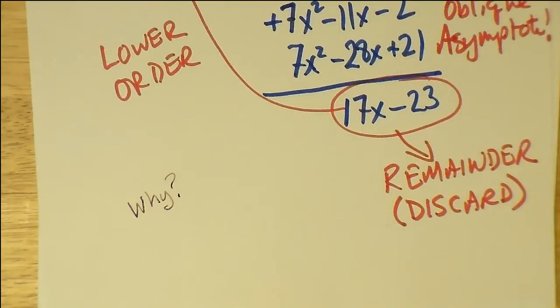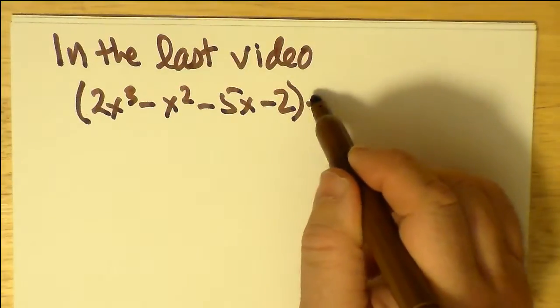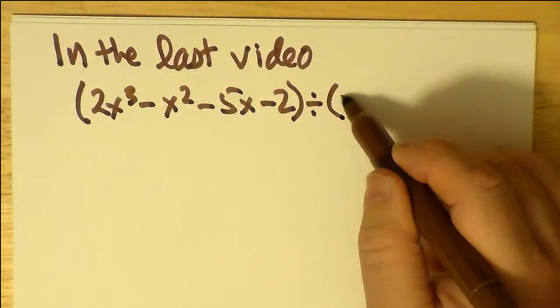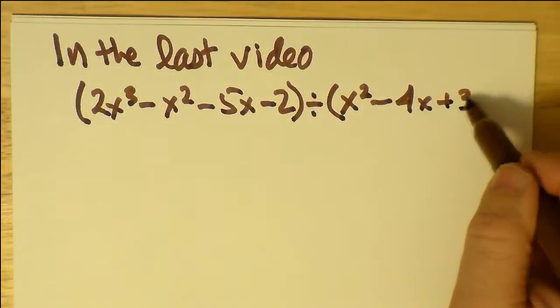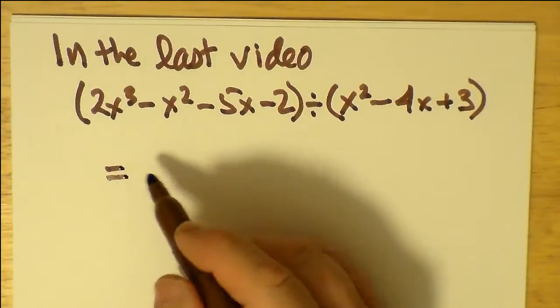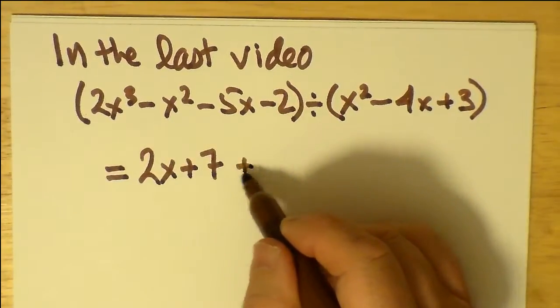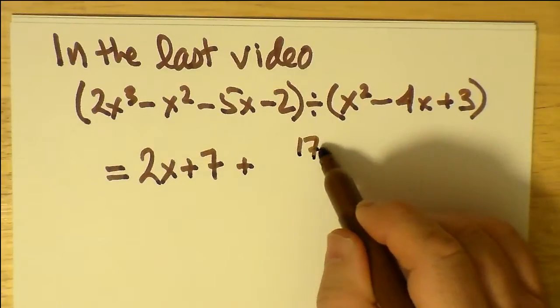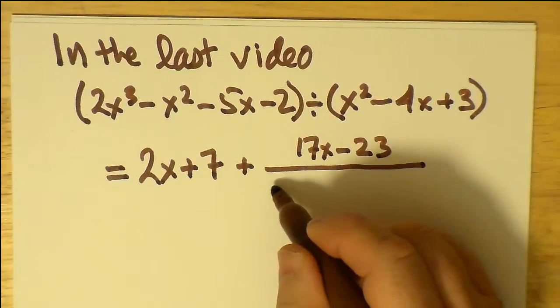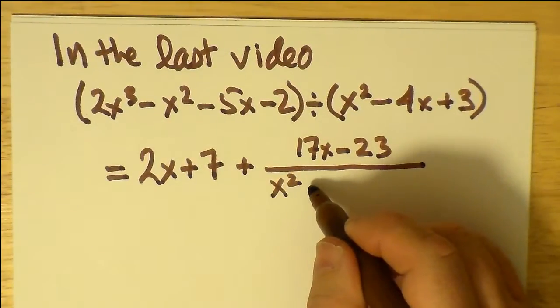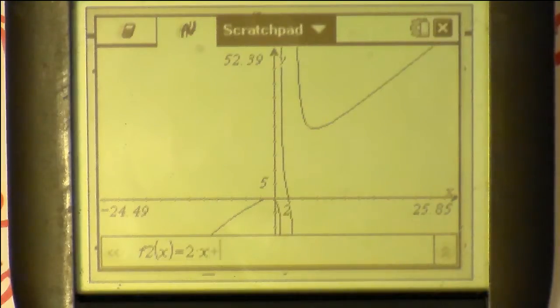Now in the last video, just to be on the safe side, we divided the denominator into the numerator of the rational function. 2x cubed minus x squared minus 5x minus 2 was being divided by the polynomial x squared minus 4x plus 3. We obtained the line 2x plus 7, but then we had this remainder. The remainder could be expressed as a fraction, as another rational function, 17x minus 23 divided by x squared minus 4x plus 3.